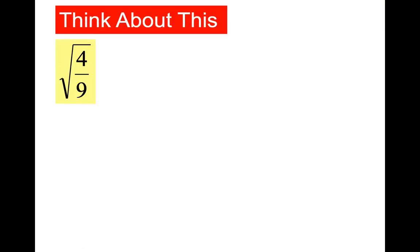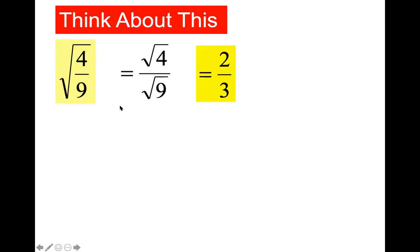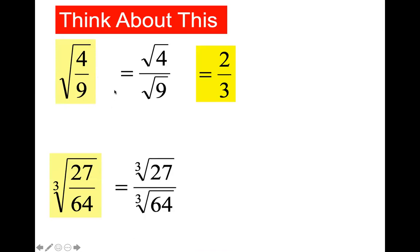Do you guys remember how to take the square root of a fraction? You take the square root of the top and the square root of the bottom separately. For example, the square root of 4 over 9: square root of 4 is 2, square root of 9 is 3, so we get two-thirds. Same thing for cube roots — instead of taking square roots, we take cube roots of the top and bottom. The cube root of 27 over 64 is 3 over 4.